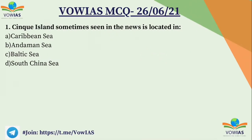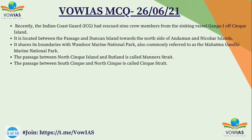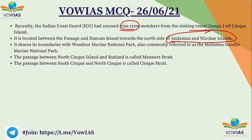The first question: Scenic Island, which is sometimes seen in the news, is located in which sea? A. Caribbean Sea, B. Andaman Sea, C. Baltic Sea, D. South China Sea. The correct answer is B — Andaman Sea. Recently, the Indian Coast Guard rescued nine crew members from a sinking vessel near Scenic Island. The Scenic Island is located between the passage and the Duncan Island, towards the north of Andaman and Nicobar Islands.